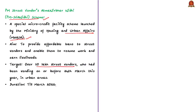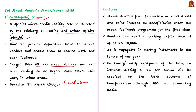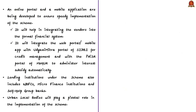For the first time, street vendors from rural areas are being included as beneficiaries under an urban livelihood program. Under this scheme, vendors can avail a working capital loan of up to Rs. 10,000, repayable in monthly installments over one year. If a vendor repays before the due date, an interest subsidy of 7% per annum is credited to the vendor's bank account through direct benefit transfer on a six-monthly basis. To increase outreach and speedy implementation, an online portal and mobile application are also being developed. This IT platform will integrate vendors into the formal financial system.